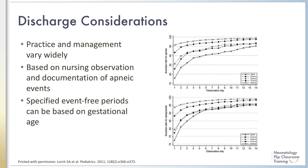Practice and management surrounding discharge decisions for infants with apnea of prematurity varies widely. Decisions to discharge are usually based on nursing observations and documentation of clinical apneic events, which may not be accurate. Most physicians require an infant to be event-free for a period of time prior to discharge, though the length of event-free time is also variable. A retrospective cohort study of 1,400 infants by Lorch et al. reported that a 5-7-day apnea-free period successfully predicted resolution of apnea in 94-96% of cases. The success rates were lower for infants born at younger gestational ages, as can be seen in the graphs on the right, with success rates of being event-free on the y-axis and time in days on the x-axis.